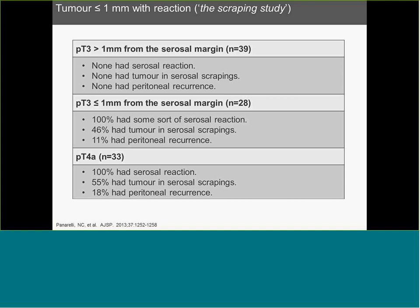This brings us to the famous scraping study led by Dr. Yentes in 2013. They took 100 patients with either pT3 with more than one millimeter from the serosal margin, within one millimeter, or clear pT4, and scraped the peritoneal surface prior to grossing. For tumors more than one millimeter from the serosal margin, there was nothing in the serosal scraping and no peritoneal recurrence. For those within one millimeter, 50% had tumor in the serosal scraping and 11% had peritoneal recurrence — not too different from the pT4A lesions, which showed 55% tumor in scraping and 18% peritoneal recurrence.